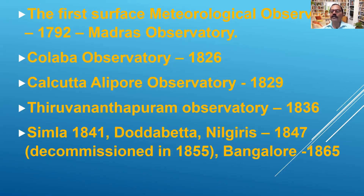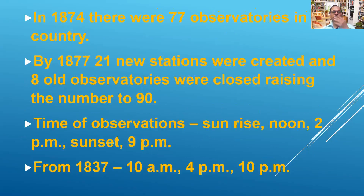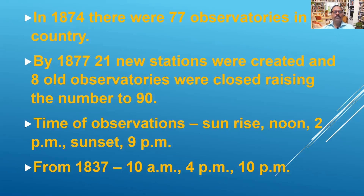In 1847 one of the observatories was opened at Dodabetta, the tallest peak in the Nilgiri Hills, but this was decommissioned in 1855. The Bangalore Observatory was started in 1865. By 1874 there were 77 observatories in the country — this 77 probably does not include observatories under several provinces including the Madras Province. By 1877, 21 new stations were created and 8 old observatories were closed, bringing the total to 90.